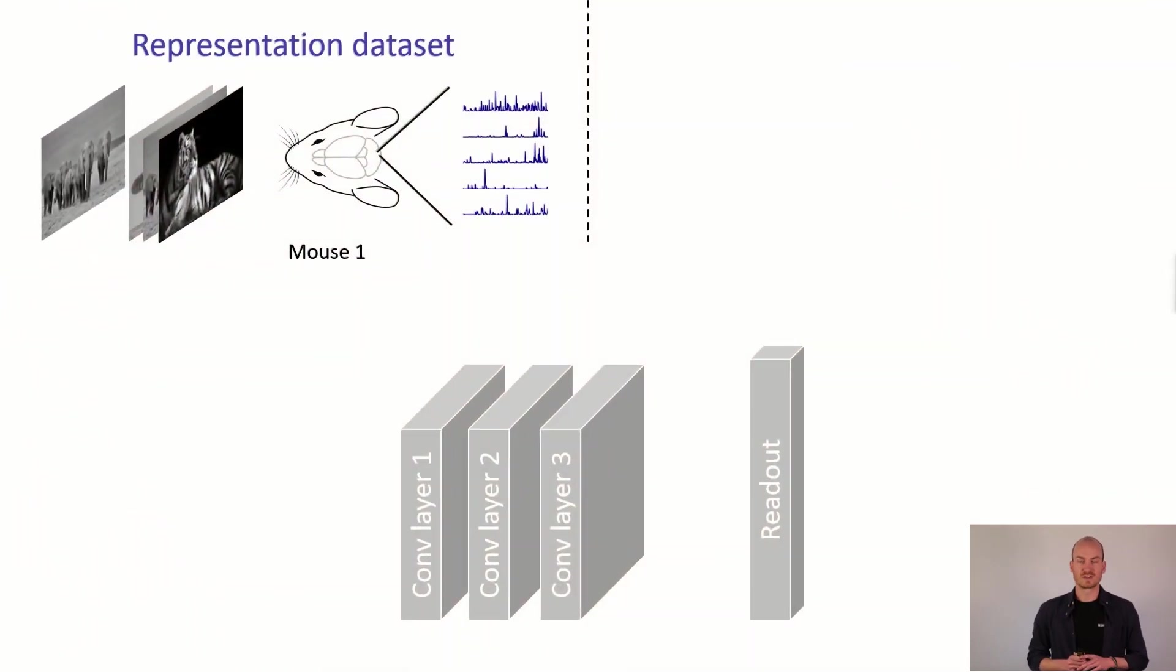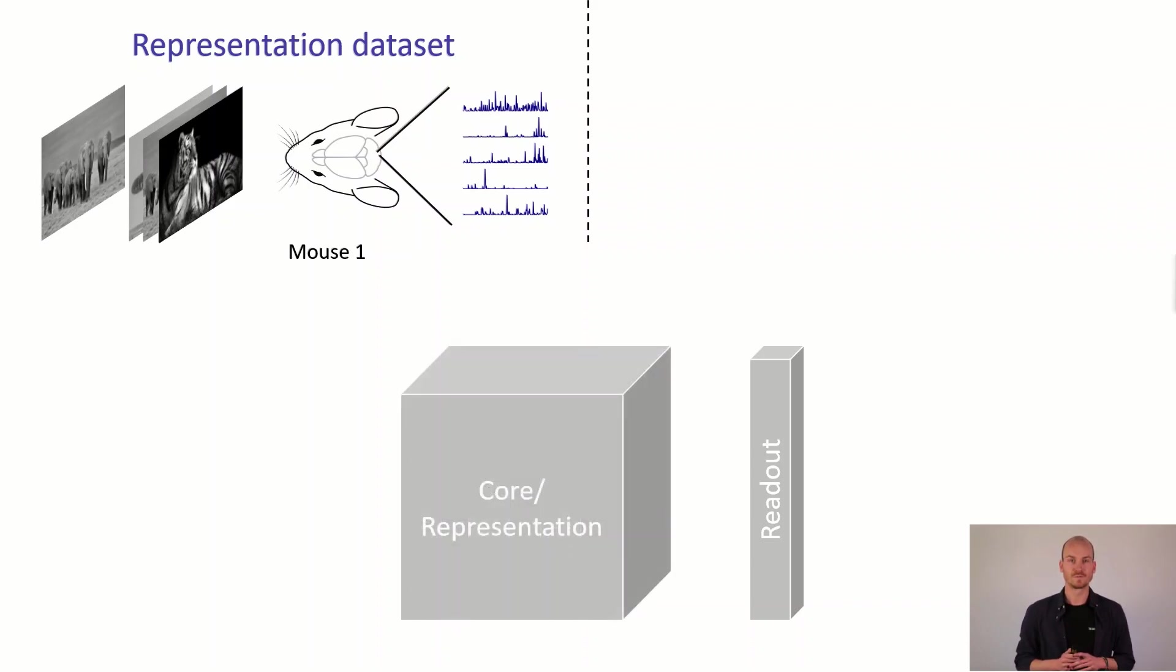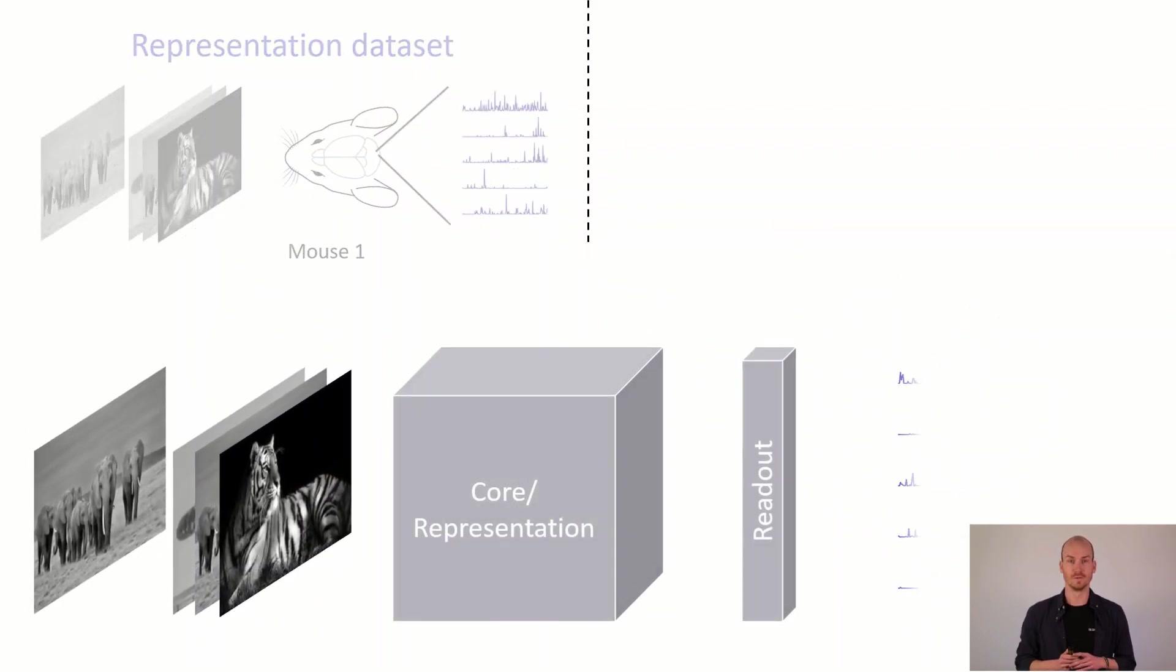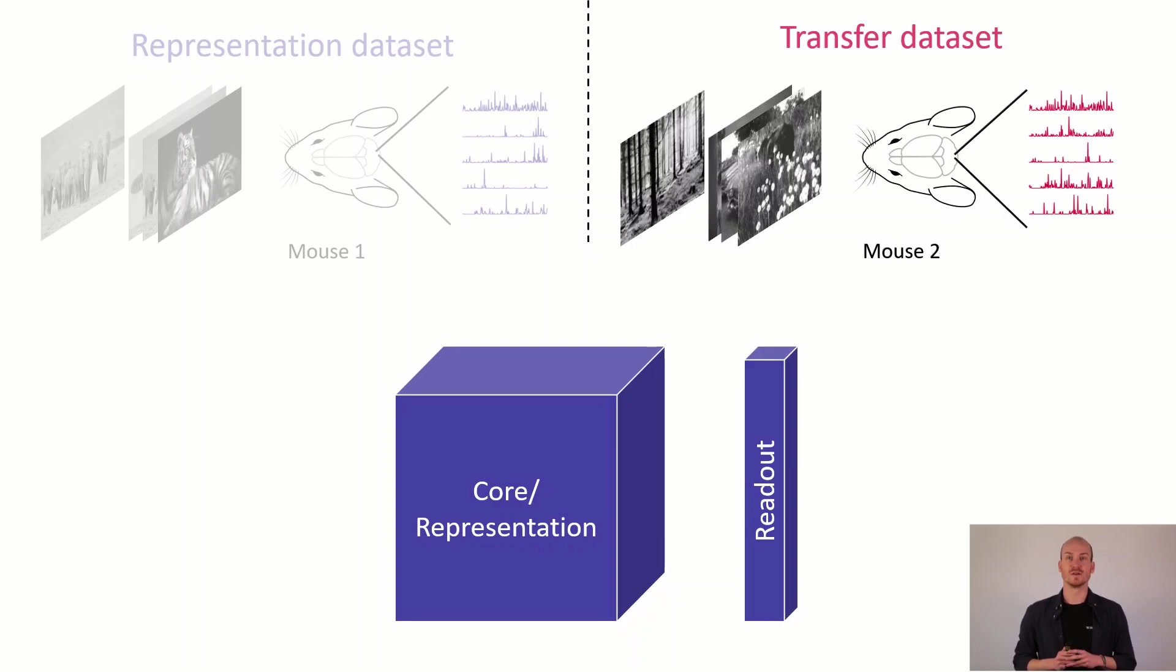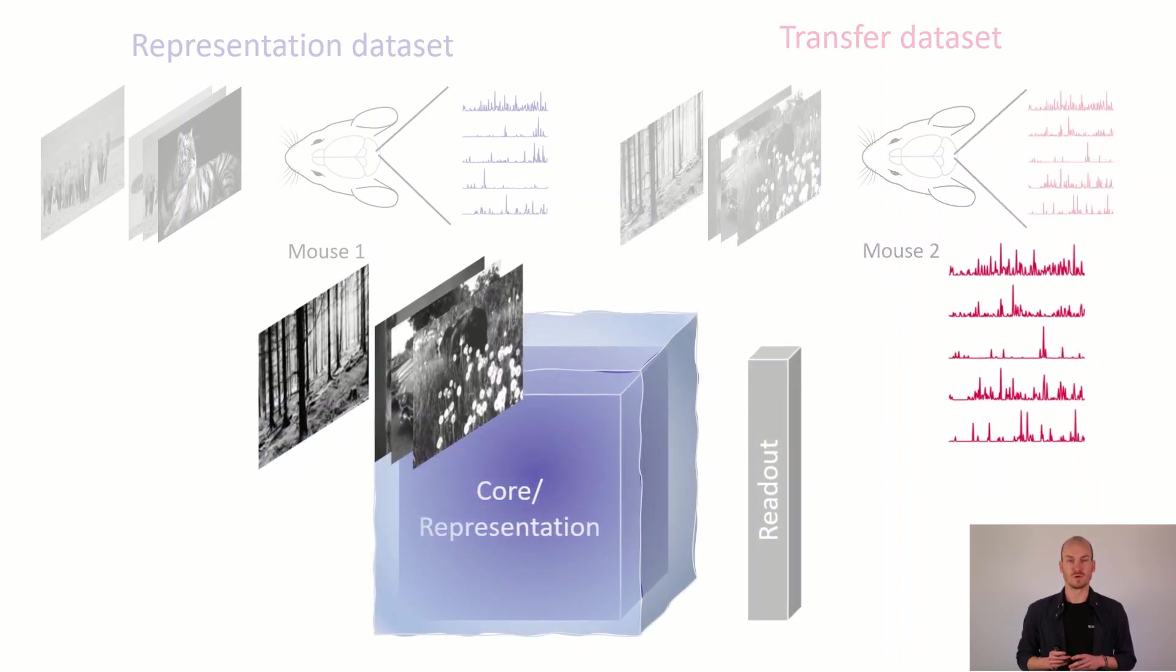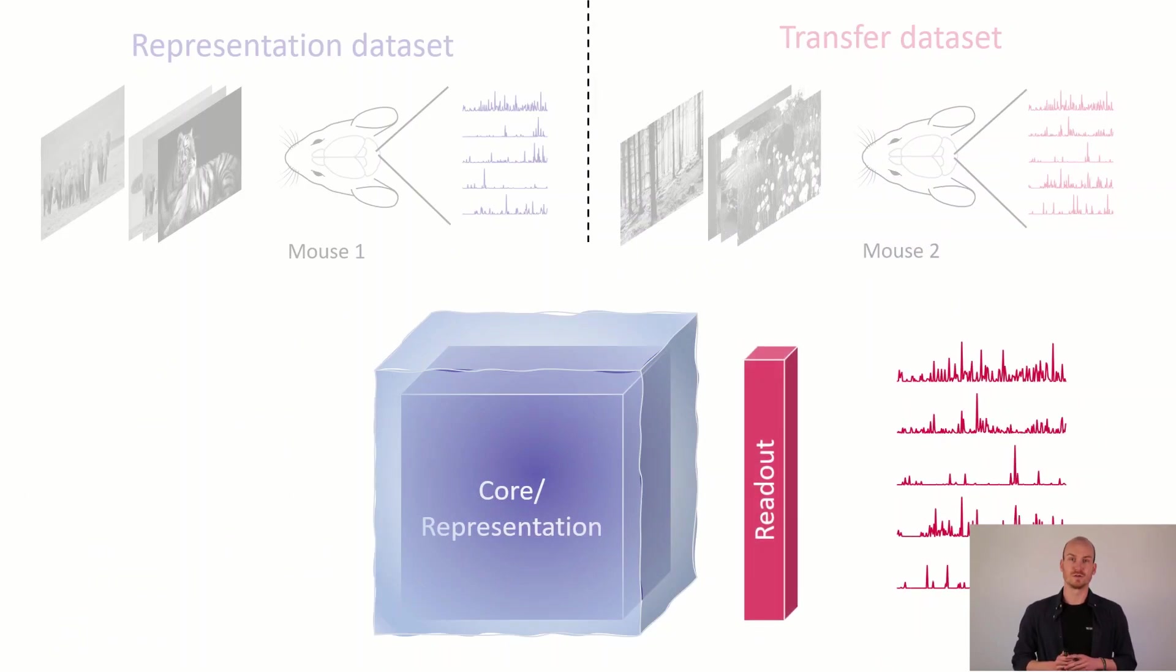The data-driven transfer is actually quite similar. Again we have some basic networks consisting of convolutional layers which we label the core. Now what is different is that we train the representation on neural data as well. This neural data now is used to predict another dataset from a different mouse and different neurons, i.e. generalizing to different neurons. We replace the readout, freeze the core, and again train only the readout on the transfer dataset.